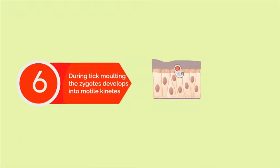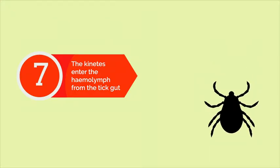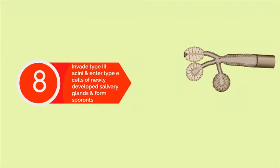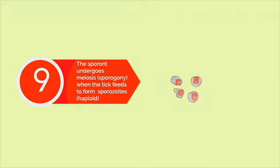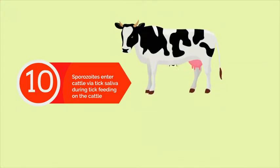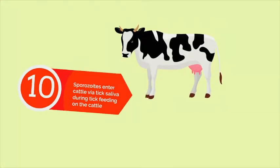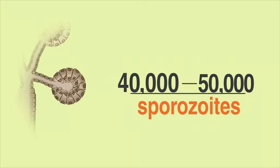Step 6: During tick molting, the zygotes develop into motile kinetes. Step 7: The kinetes enter the hemolymph from the tick gut. Step 8: They invade type III acini and enter type E cells of the newly developed salivary glands and form sporonts. Step 9: The sporont undergoes meiosis and sporogony when the tick feeds, to form sporozoites (haploid). Step 10: Sporozoites enter cattle via tick saliva during tick feeding. One acinar cell is estimated to contain between 40,000 to 50,000 sporozoites.